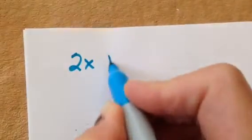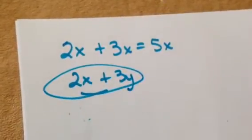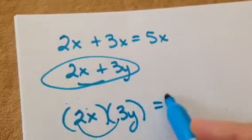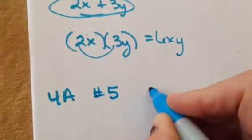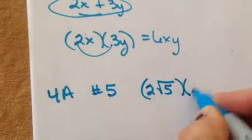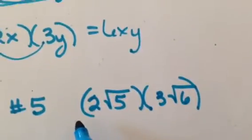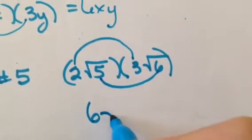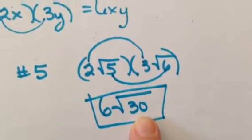You can always add only like terms — we've already done that. You cannot add things that are not like. But you can multiply anything; it doesn't matter if they're like or not. Let's look at 4a number 5: 2 square roots of 5 times 3 square roots of 6. It's not asking me to add them — it's asking me to multiply, and you can multiply anything. Multiply the numbers on the outside of the radical: 2 times 3 is 6. Multiply the numbers on the inside: 5 times 6 is 30. So you get 6 square roots of 30. Just be sure there's nothing perfect in there — 4 doesn't go in, 9 doesn't go in. So that's it.